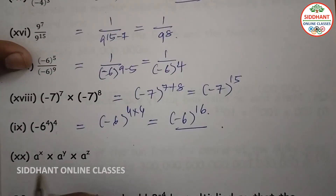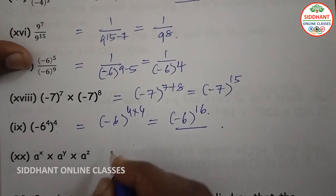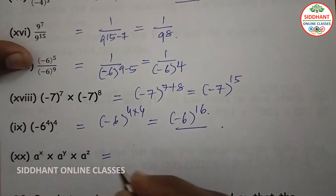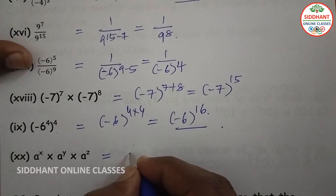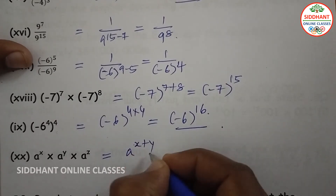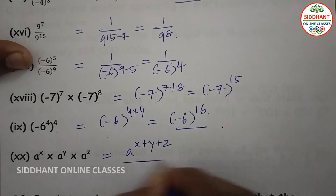Next: a to the power of x into a to the power of y into a to the power of z. Bases are same, so we add the powers, giving a to the power of x plus y plus z.